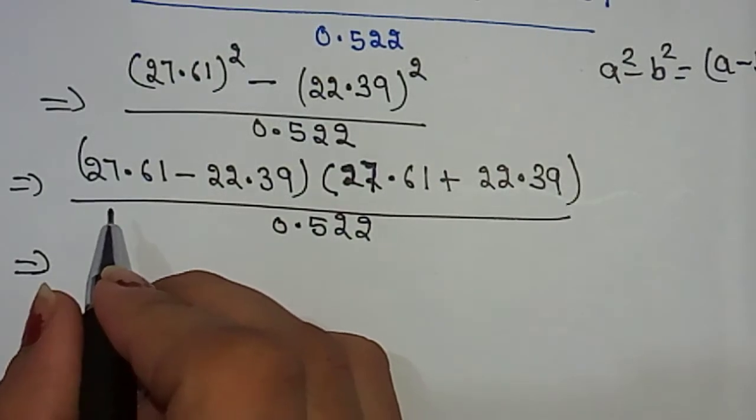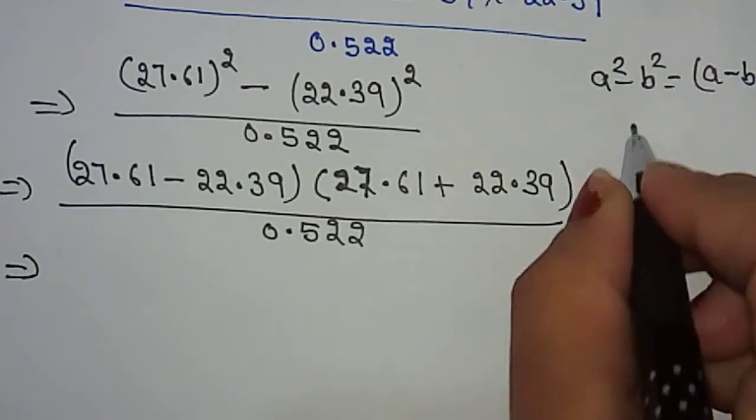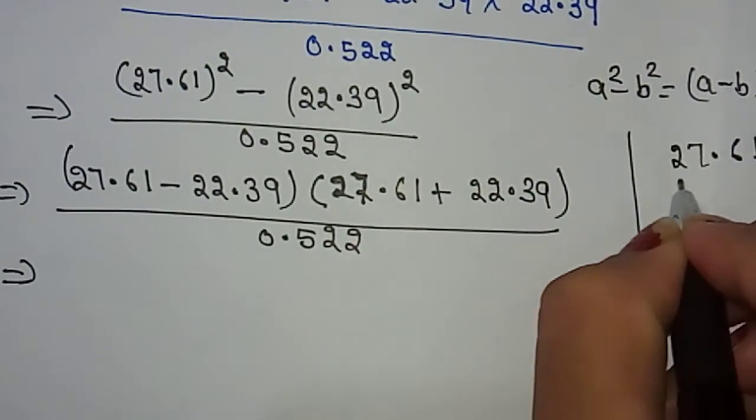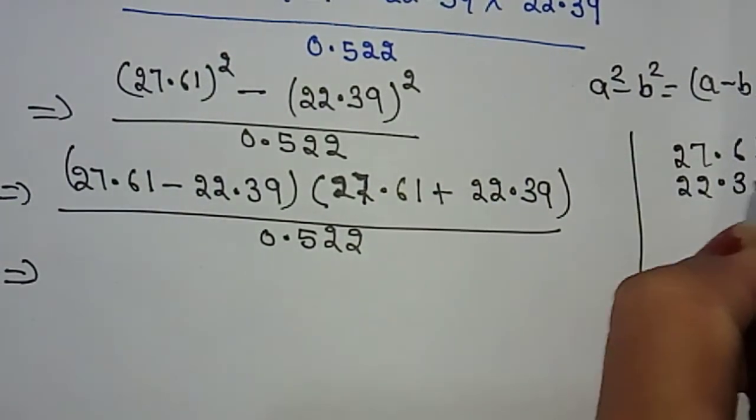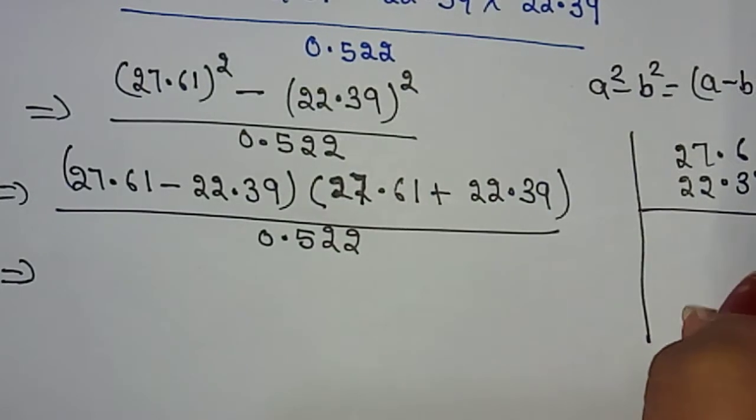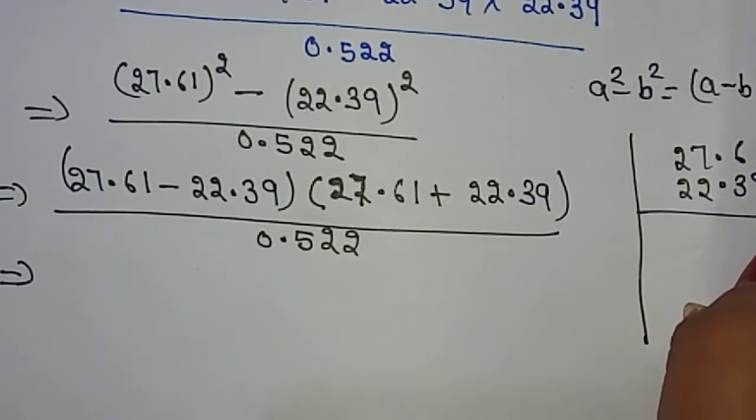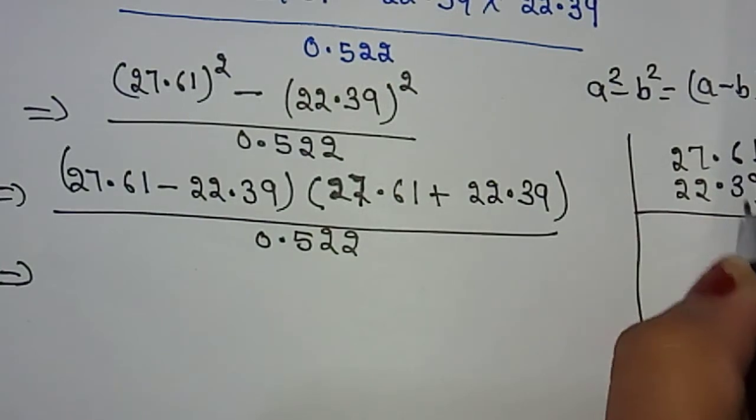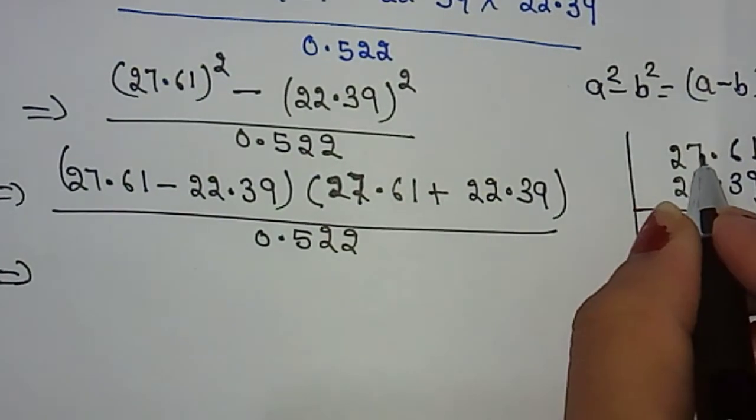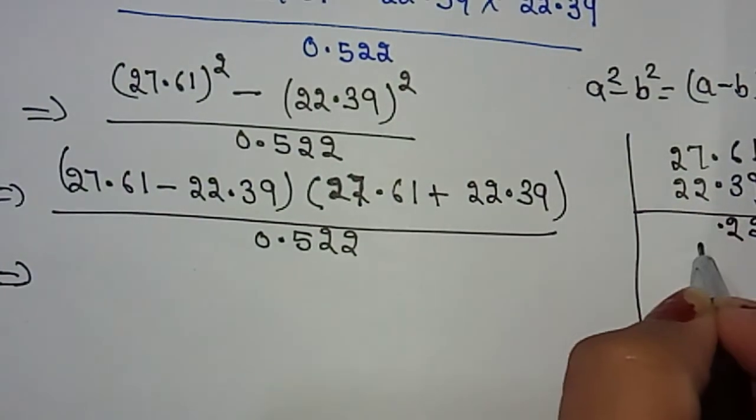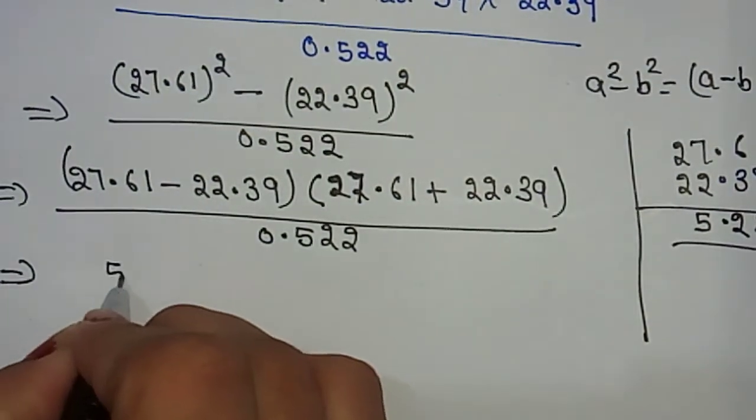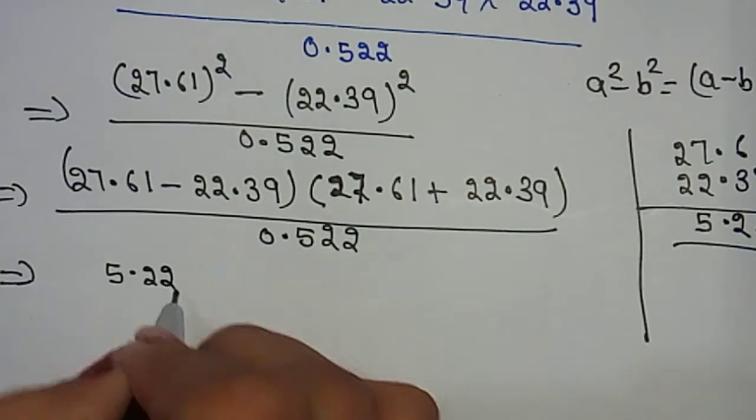Now subtract this number: 27.61 - 22.39. It means 1 - 9... we need to borrow. So 11 - 9 = 2, 5 - 3 = 2, 7 - 2 = 5. So the number becomes 5.22.